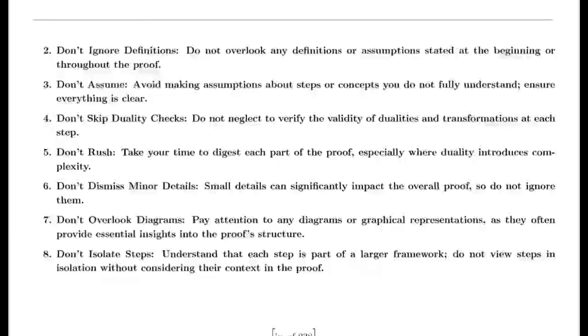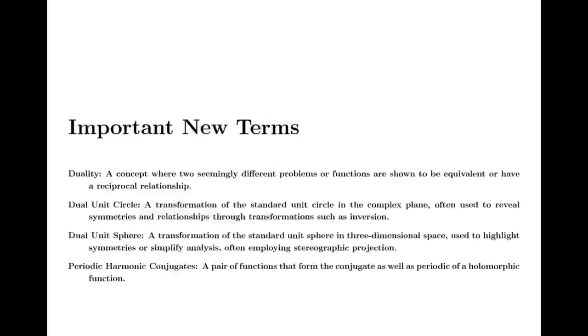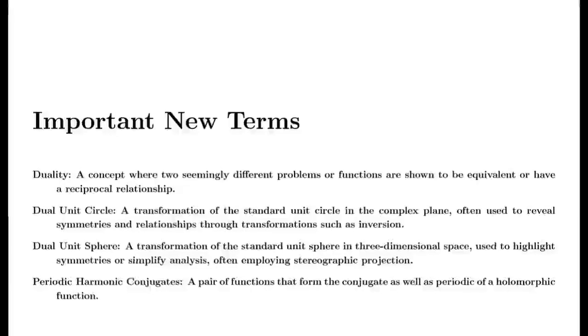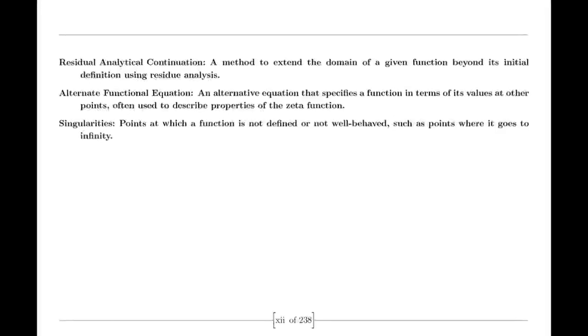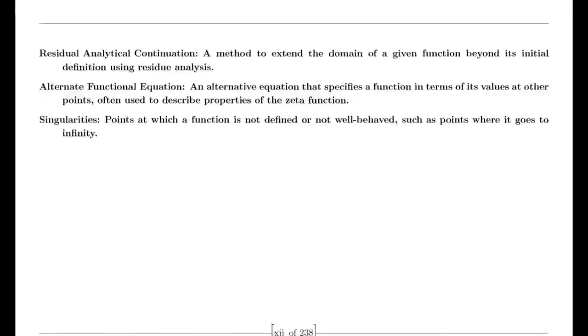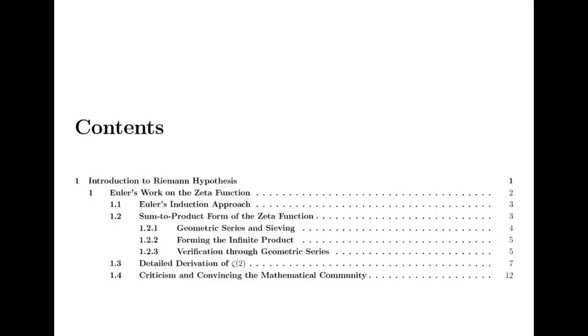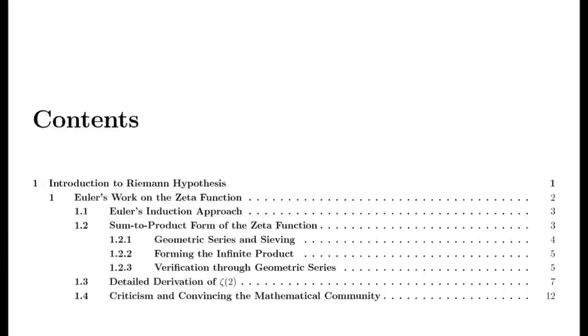Moving to the 19th century, we encounter Bernhard Riemann, who expanded our understanding of complex functions. Riemann introduced the concept of analytic continuation, allowing extension of functions beyond their initial domains. He extended the Riemann zeta function — initially defined only for complex numbers with real parts greater than one — to the entire complex plane except at s equals one, where it has a simple pole. This was a crucial advancement in complex analysis.